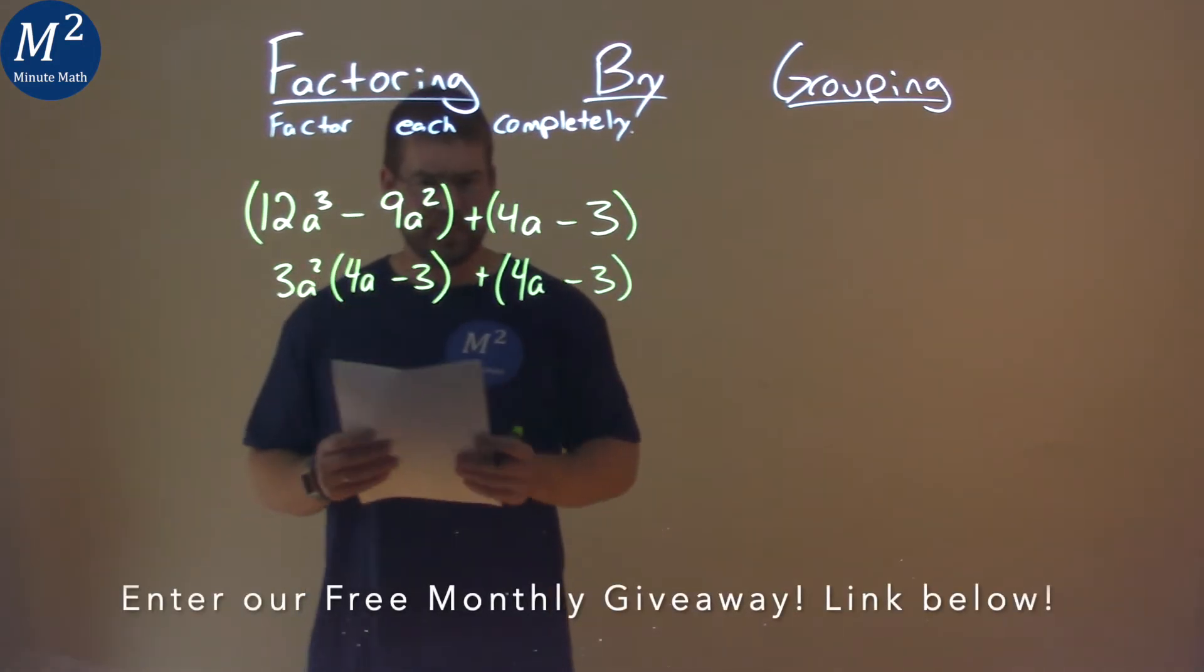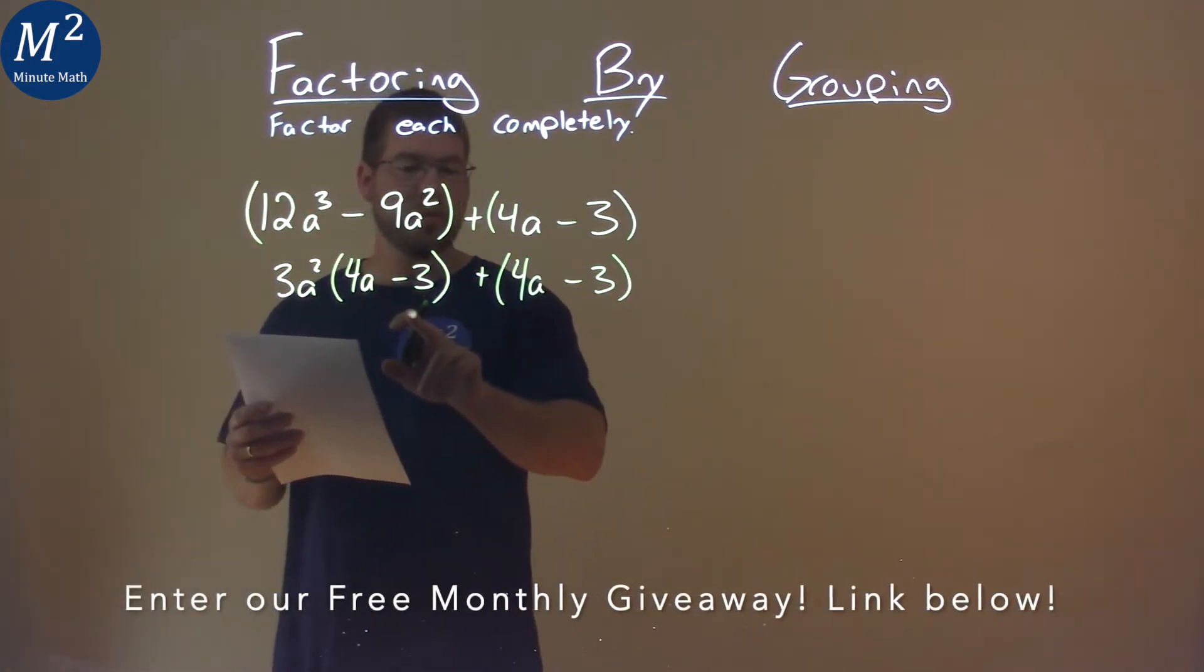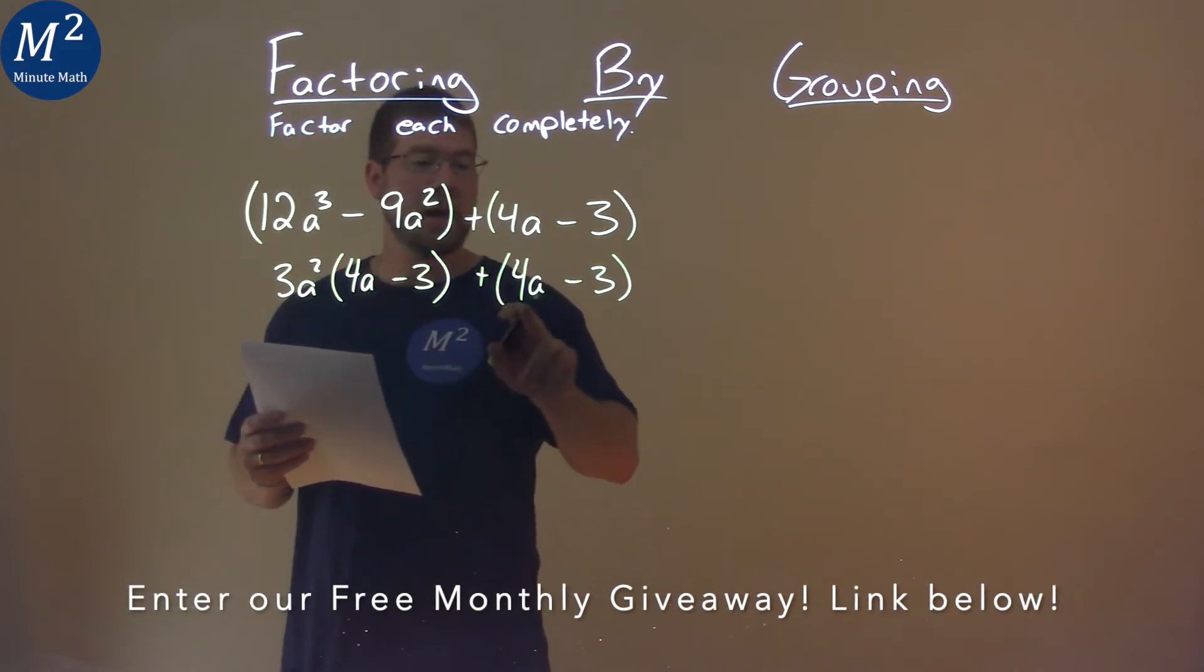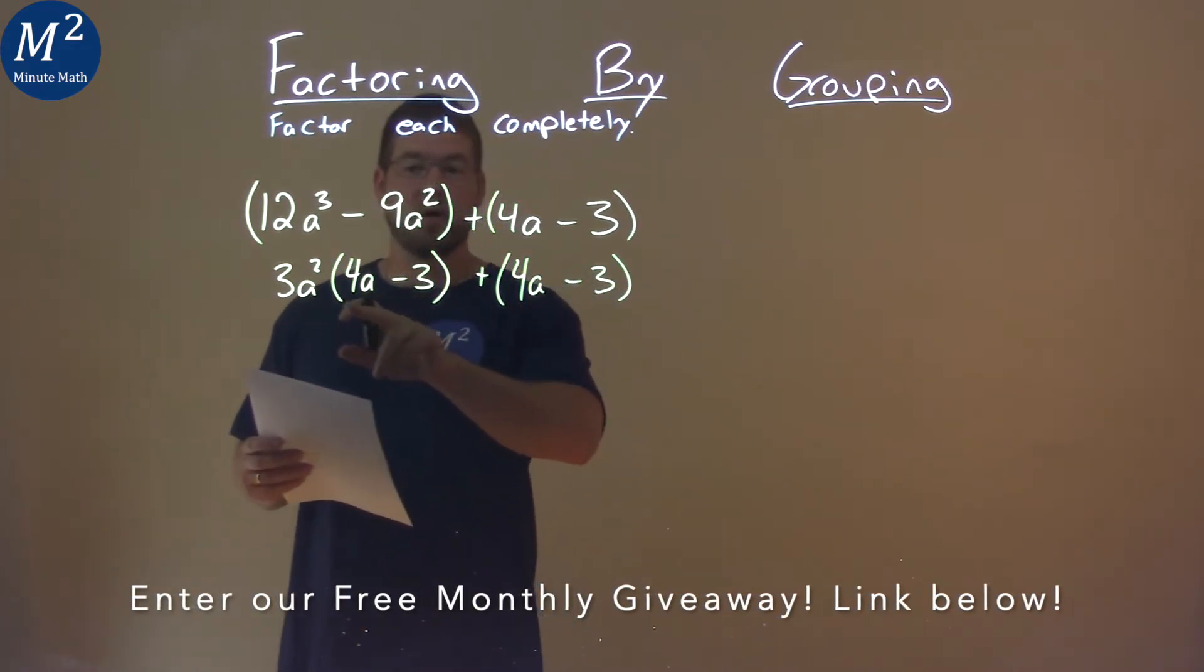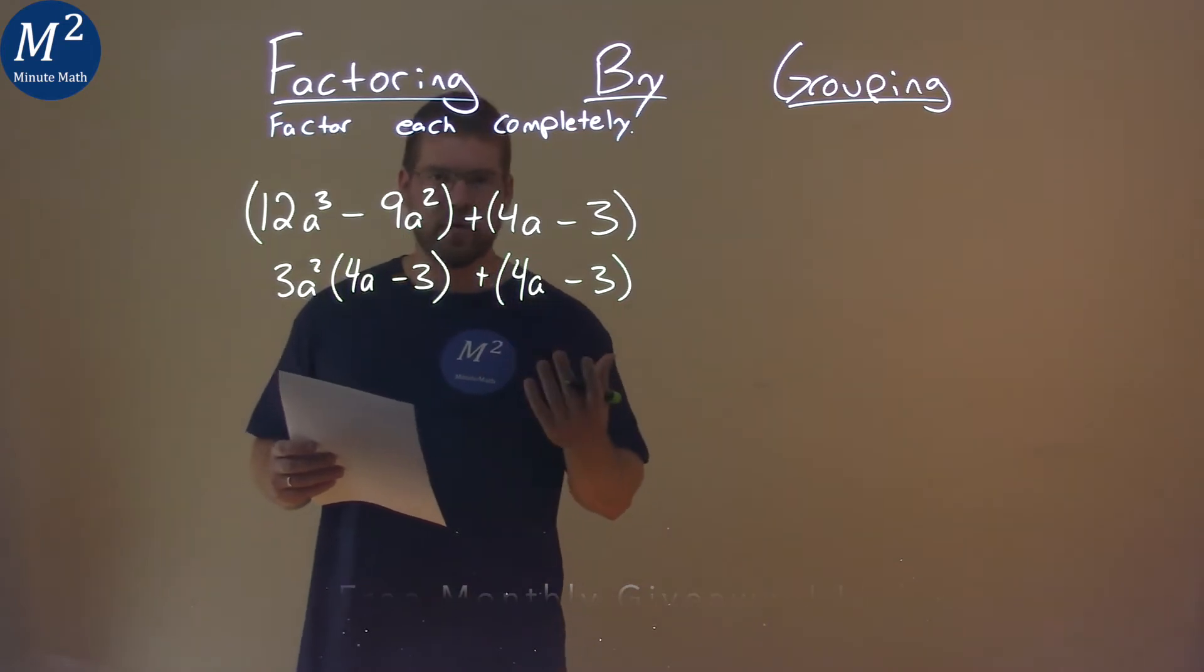Now, what do we notice? Well, we see that we can pull out a 4a minus 3 from both parts. This is being multiplied, and then there's kind of like a 1 being multiplied right there.